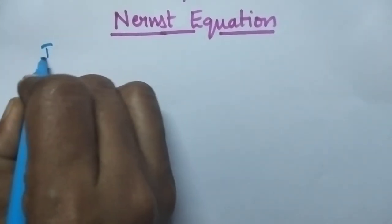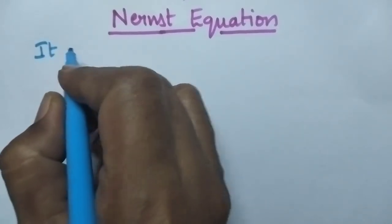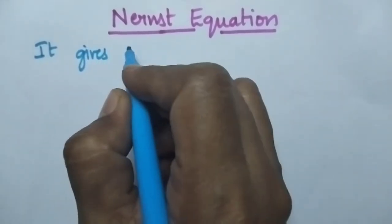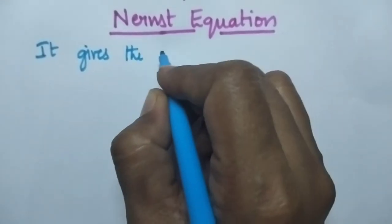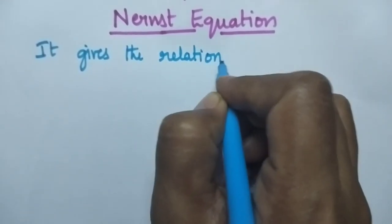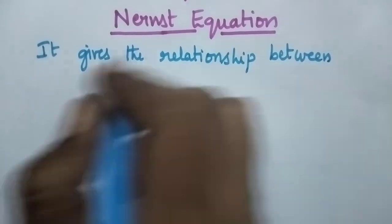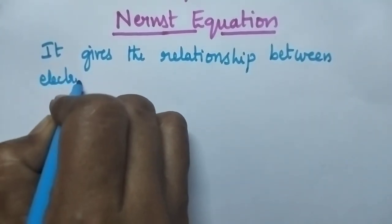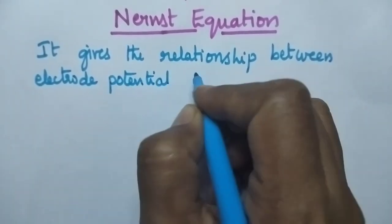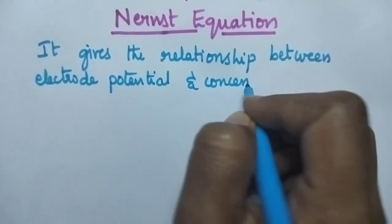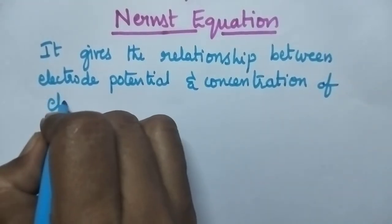The Nernst equation gives the relationship between the electrode potential and concentration of the electrolytic solution.